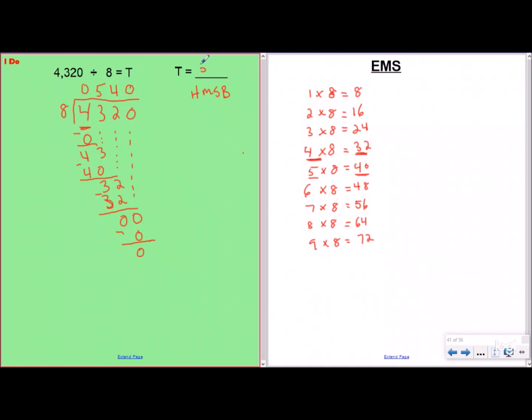So my answer is 540. So we're going to say that T equals 540. If you want to double check it using your inverse operations, you can do that. So 540 times eight: zero, 32, regroup your three, 40 plus three would be 43. And although that's terrible handwriting, that is 4,320, which is my dividend. So my answer is correct.